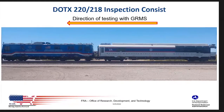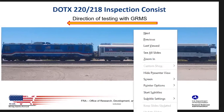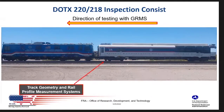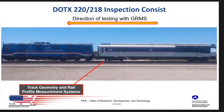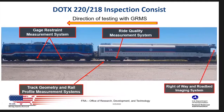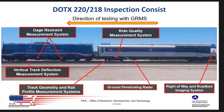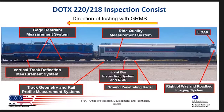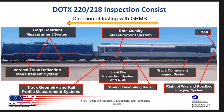I'm going to start with the DOTX 220/218. This is the FRA inspection consist — it's two cars coupled together and it's basically a comprehensive inspection platform that offers a variety of data allowing us to look beyond track geometry. It describes the conditions of the track and its various components. Track geometry and rail profile are standard measurement systems on the car. We also have a gauge restraint measurement system, a ride quality measurement system, a right-of-way and roadbed imaging system, a GPR, a vertical track deflection system, lidar, and a joint bar inspection system with RSIS — that's rail surface imaging system — and a track component imaging system.